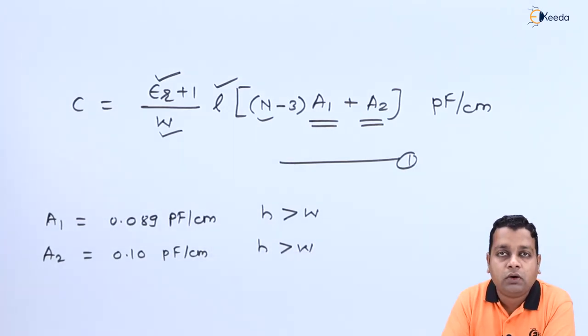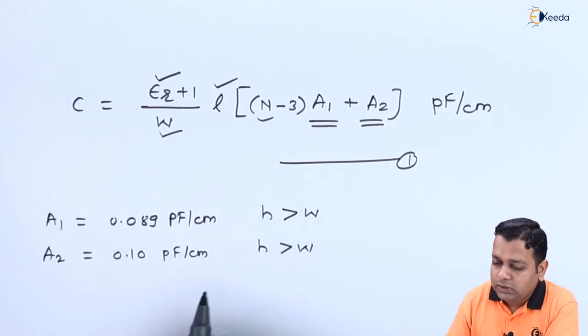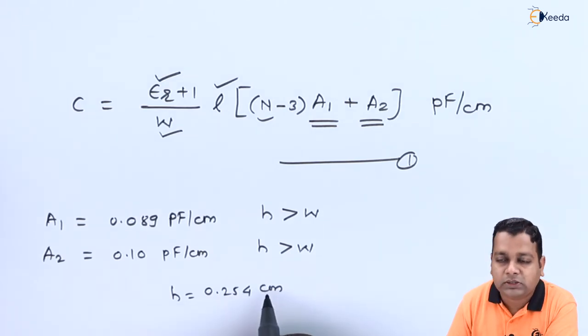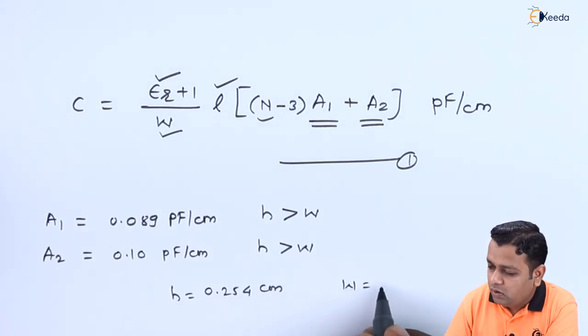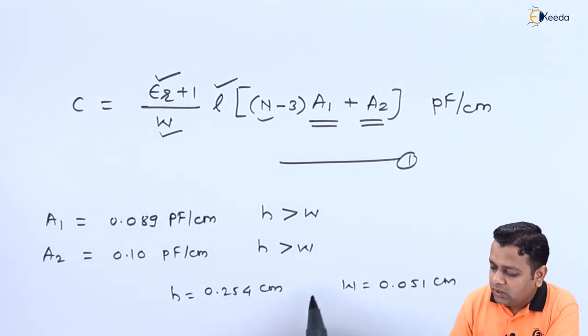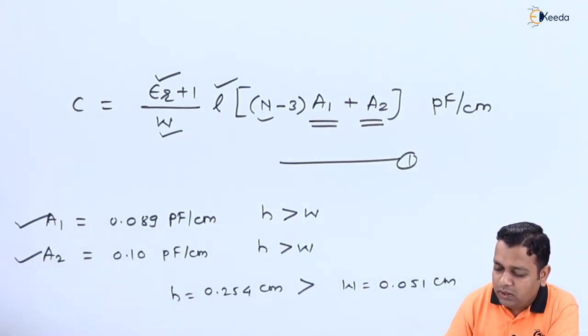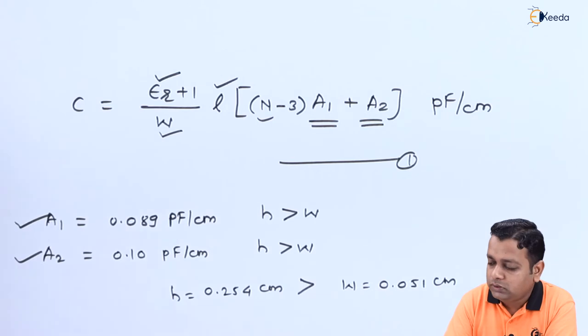So if we check on to the condition here as per the problem statement small h is equal to we have 0.255 centimeters. Whereas w is equal to we have 0.051 centimeters. Yes of course h is greater than w. So these are two values for A1 and A2 we can make up the use.